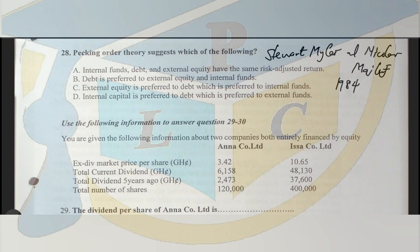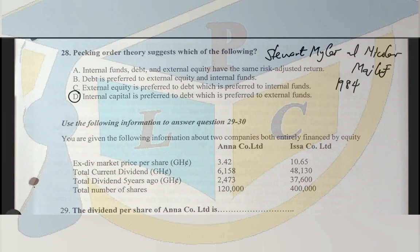Pecking Order Theory was developed to reduce information asymmetry and set priorities for capital structure decisions: internal finance is preferred over debt, and debt is preferred over equity. The answer is option D: internal capital is preferred to debt, which is preferred to external equity. The theory was by Stuart Myers and Nicholas Majluf in 1984.